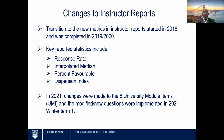In 2018, we started to transition to the new metrics. During that transition, the old metrics — the mean and standard deviation — were reported along with the new metrics. In 2019, UBC made a complete switch to the new metrics. In 2021, changes were made to the six university module item questions, and the modified and new questions were implemented in the fall of 2021. These changes are beyond the scope of this workshop, so we will be focused exclusively on the statistics in the instructor report.